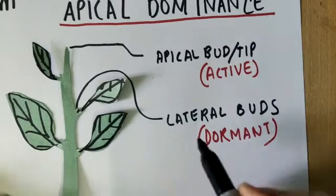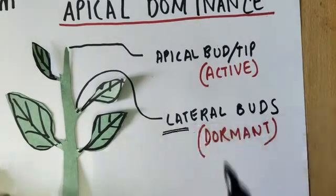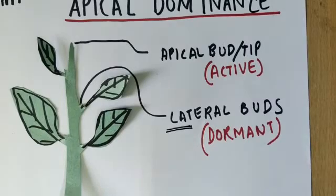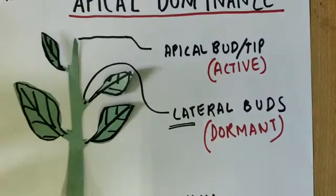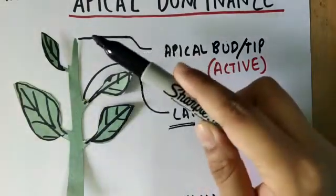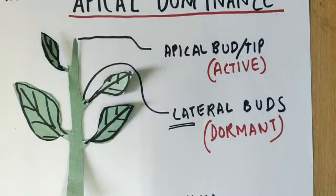This includes the lateral buds. Auxin is a hormone that doesn't allow these lateral buds to grow. So as long as auxin is being produced over here, lateral buds never grow because auxin doesn't allow these lateral buds to grow. As it keeps diffusing into the lateral buds, they never grow.